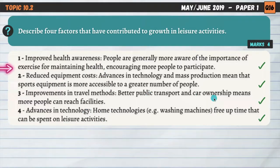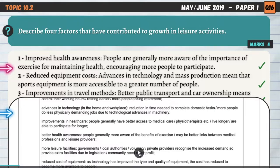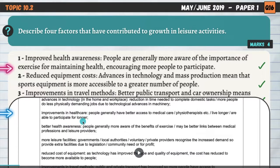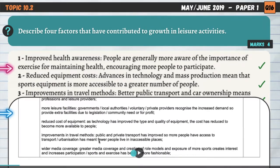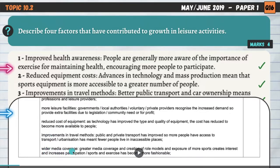Those are my four described points. Looking at the mark scheme, there are alternative points we could have gone for: improvements in healthcare, as people have better access to medical care and live longer, meaning they can participate for longer. Better health awareness, more leisure facilities — governments, local authorities and private providers recognize increased demand and provide extra facilities, which is why there are so many gyms in towns now. And finally, wider media coverage, which inspires more people to get involved in exercise or sport.